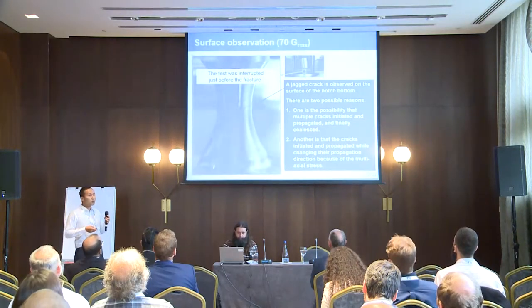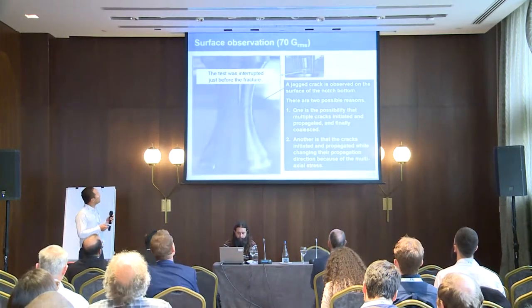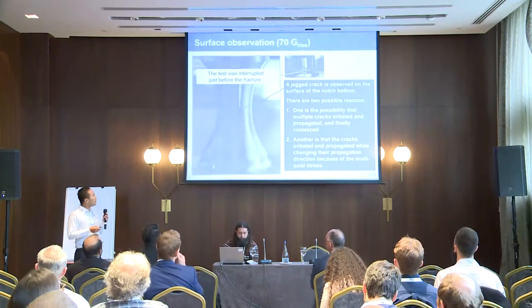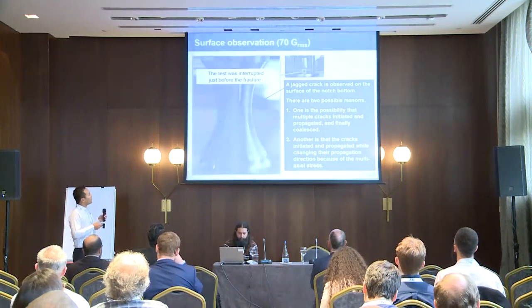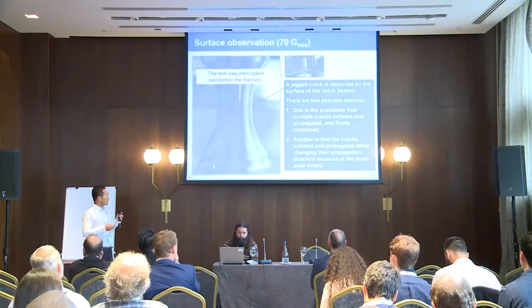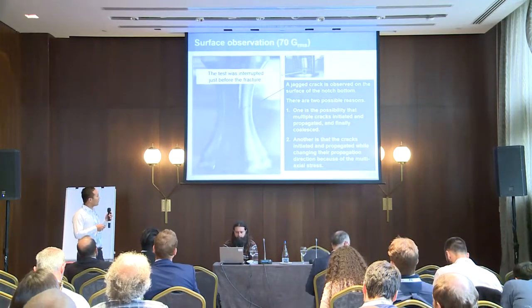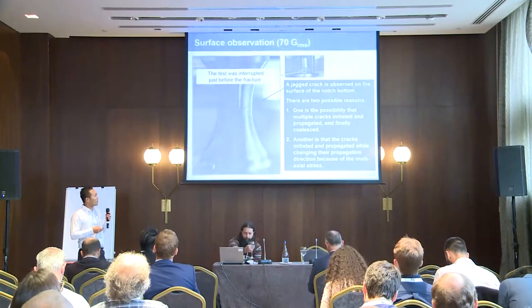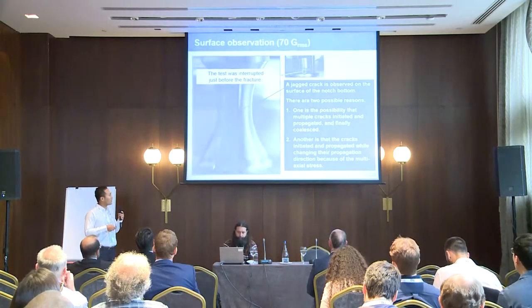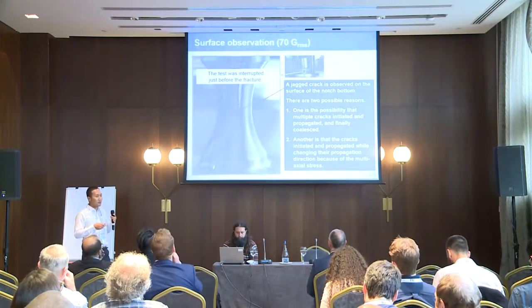We also conducted observation of the surface and fracture surface. We interrupted the vibration test just before fracture and observed the surface. You can see a jagged crack on the surface at the bottom of the notch. There are two possible reasons for this jagged shape: first, multiple cracks may have initiated, propagated, and finally coalesced; second, a crack may have initiated and propagated while changing propagation direction due to multi-axial loading.